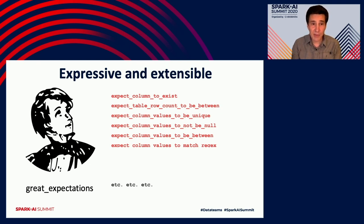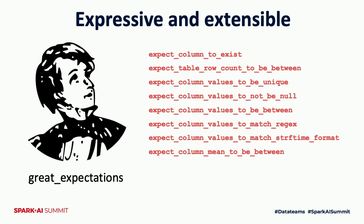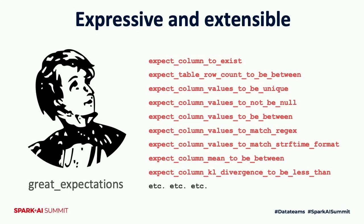Here are other examples of expectation types: `expect_table_row_count_to_be_between` X and Y, `expect_column_values_to_be_unique`. You can reason about values in a column individually, and you can also reason about a column in aggregate — for example, using KL divergence to verify that values in a column follow a particular distribution.